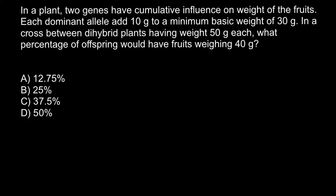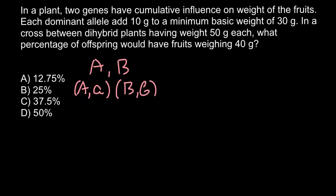Imagine when we have two genes, gene A and gene B, and both gene A and B have two alleles. Gene A has alleles capital A and small a, and gene B also has two alleles, capital B and small b. In a diploid organism we may have a variety of genotypes. For example, the genotype that is homozygous recessive for both genes would be small a, small a, and small b, small b. This genotype would make a fruit that weighs 30 grams. So let's make this the 30-gram category.